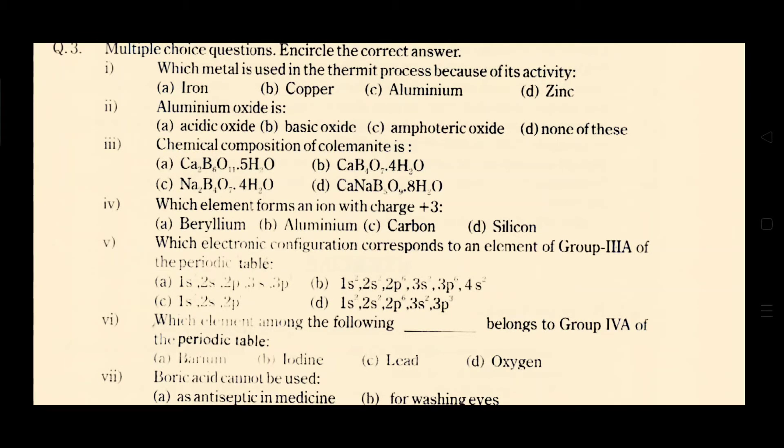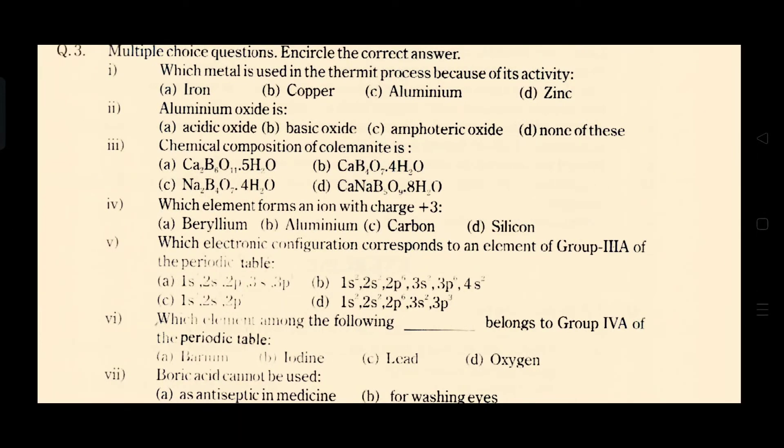And the third MCQ is chemical composition of columinite is. The option A is correct. The chemical formula of columinite is Ca2B6O11.5H2O. So option A is the right option.